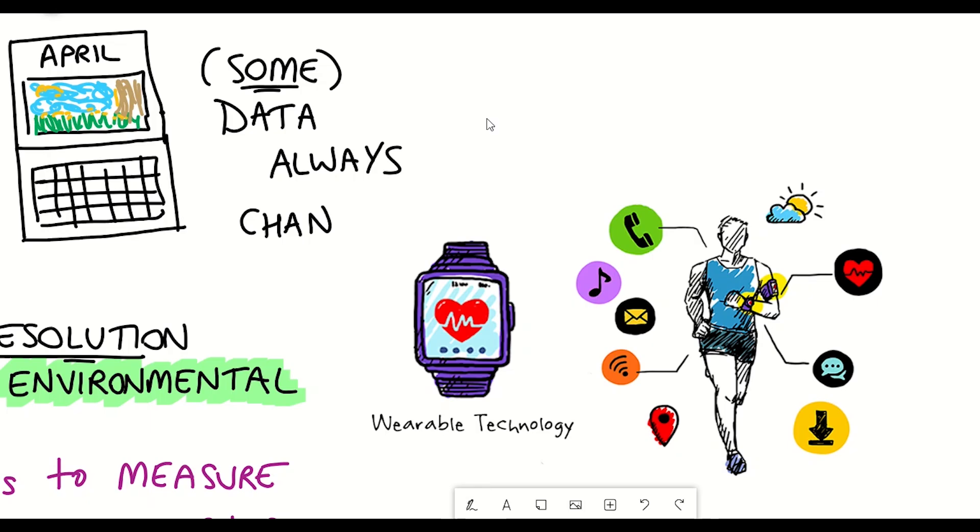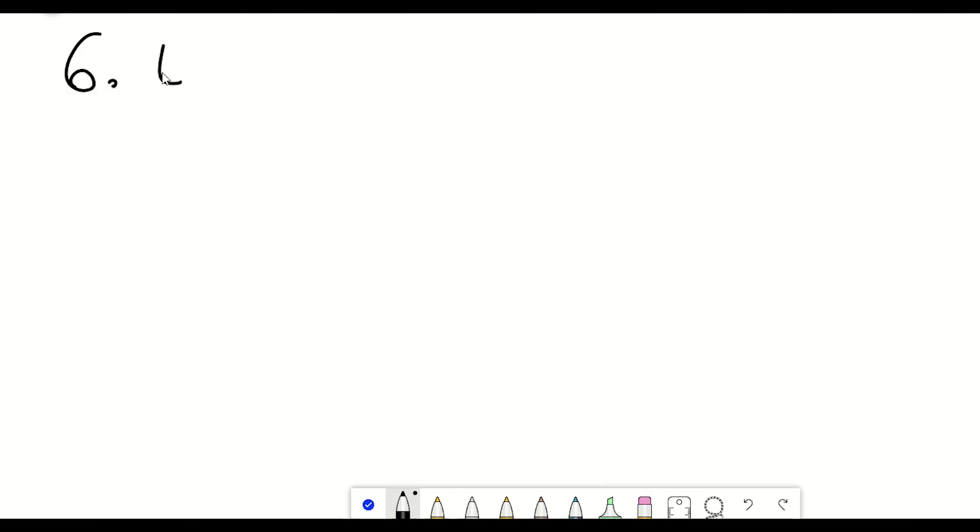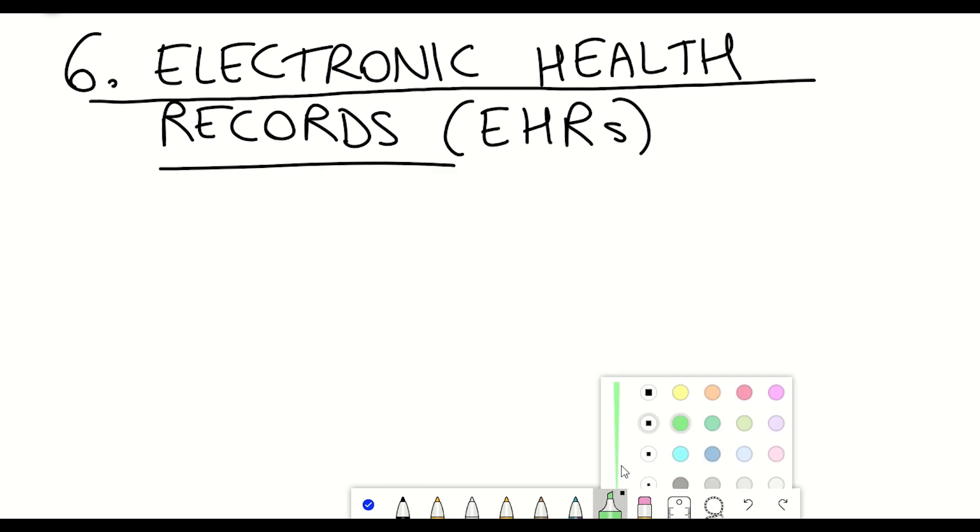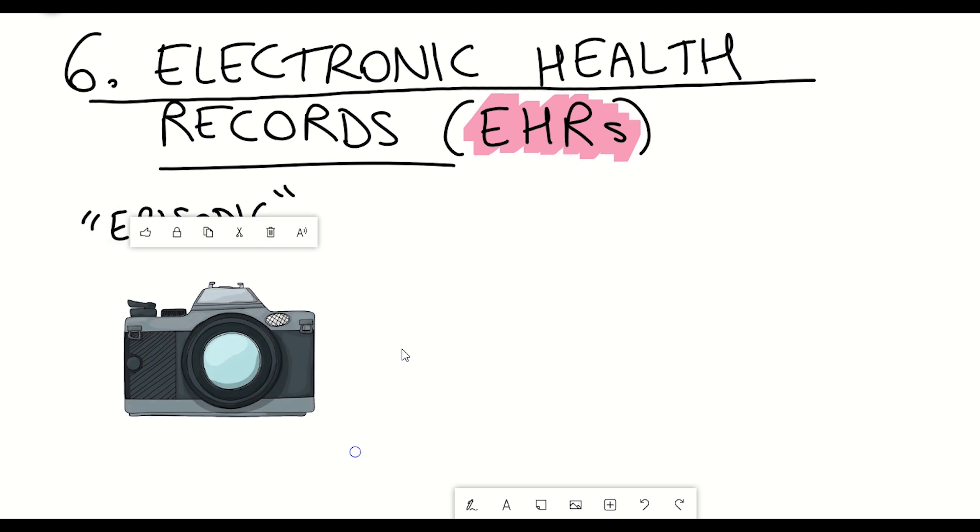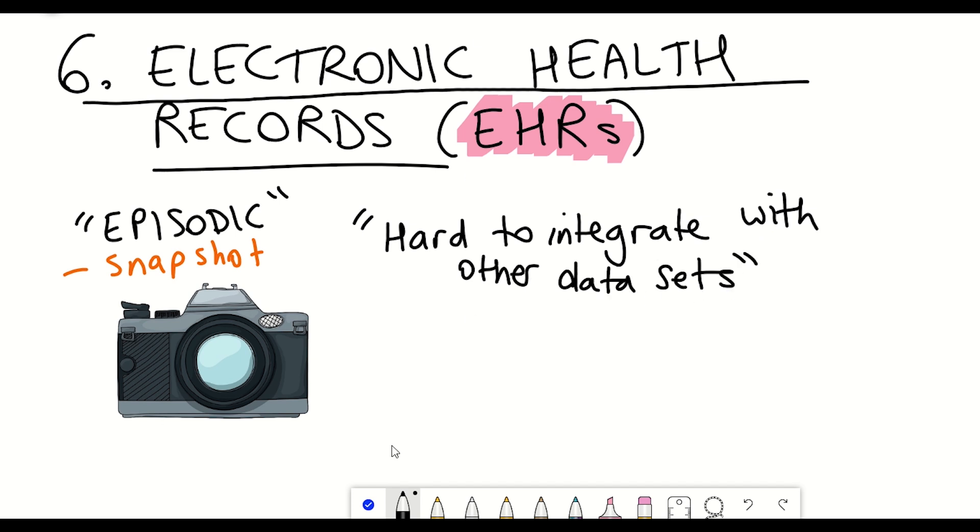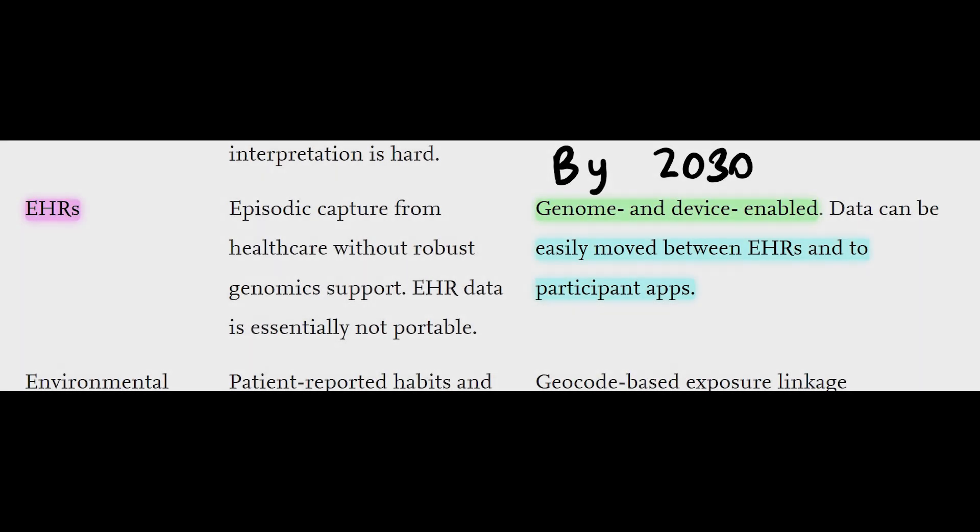So where is all this information going to be stored for an individual? Well, this brings us on to the next opportunity, which is the use of electronic health records as a source of phenomic and genomic research. Now, electronic health records are not new and are already extensively used. However, at the moment, they're only episodic captures from healthcare without robust genomic support. Moreover, the data is pretty much not portable in terms of being able to integrate it with different health records. And so by 2030, the hope is that the electronic health records will not only be genome and device enabled, but that the data can be easily moved between electronic health records and to participants' apps.